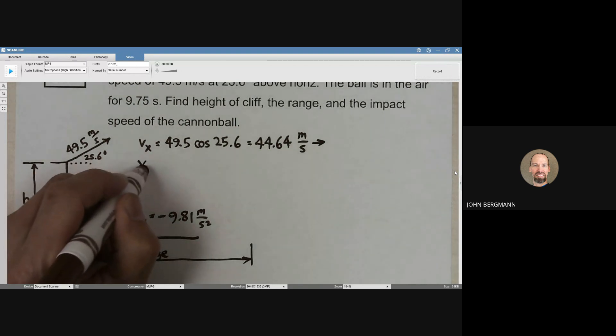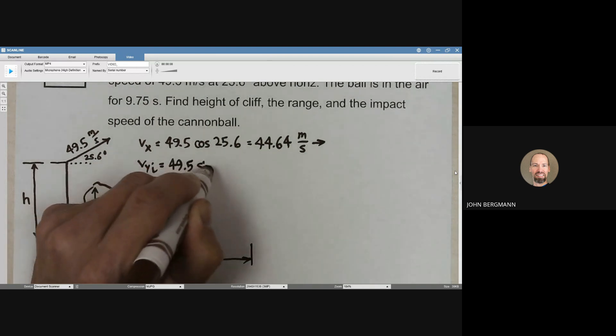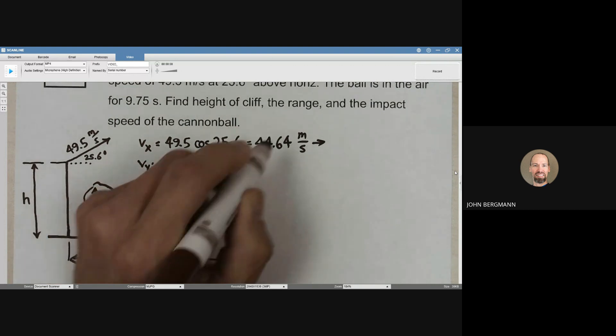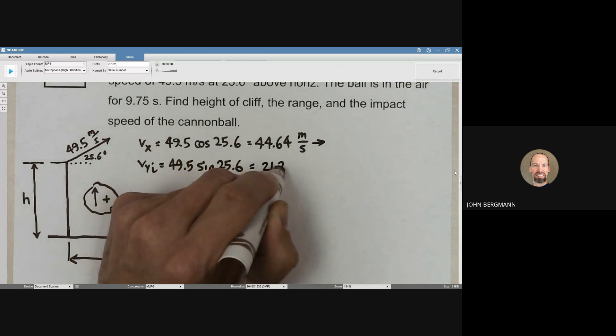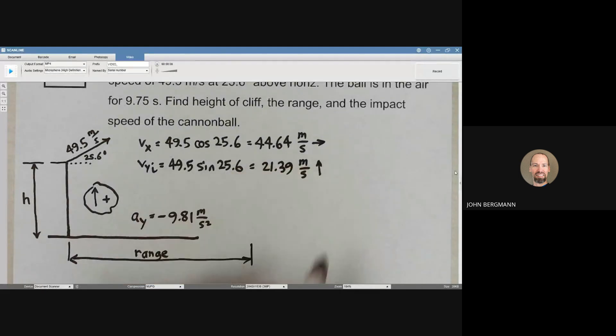Let's find vy initial. vy initial is 49.5 times the sine of 25.6, and I got that to be 21.39 meters per second. Upward, that's a positive number because you can see right here where I've circled, I've defined upward to be positive. Find the height of the cliff.